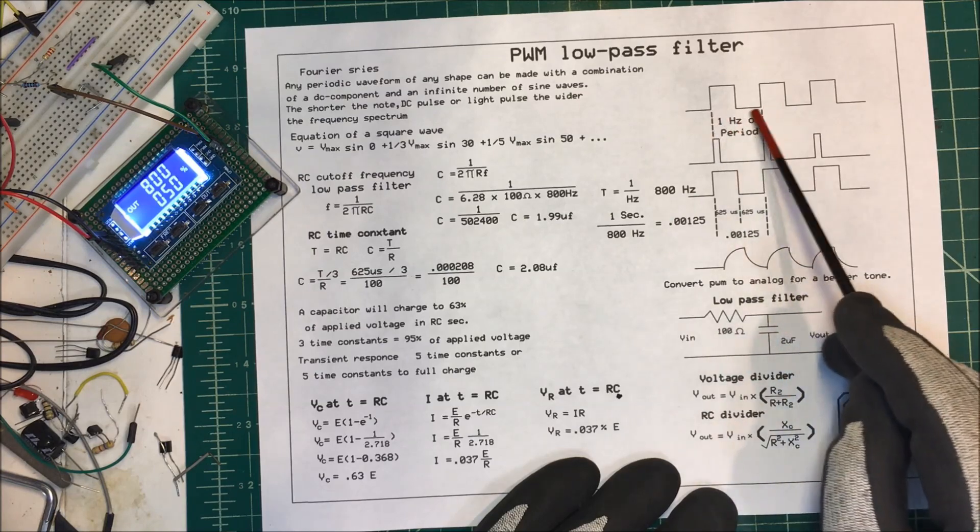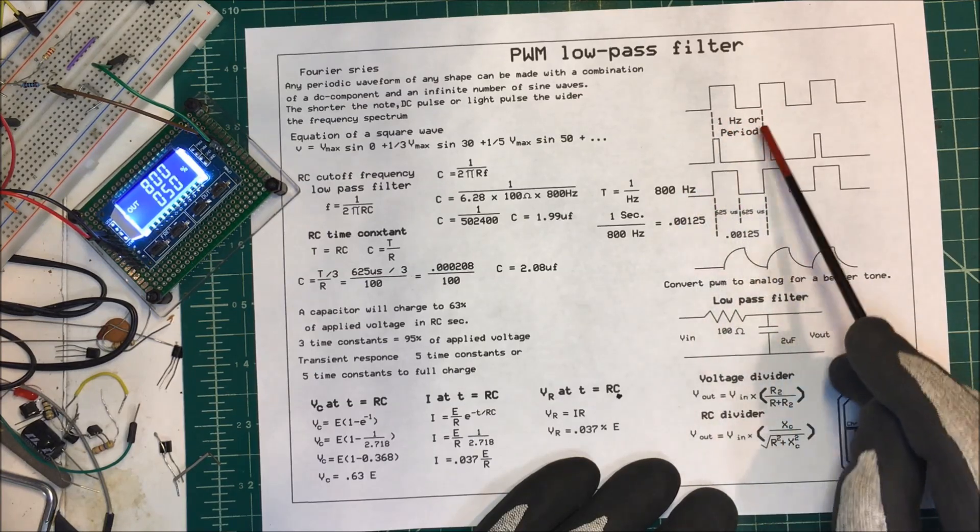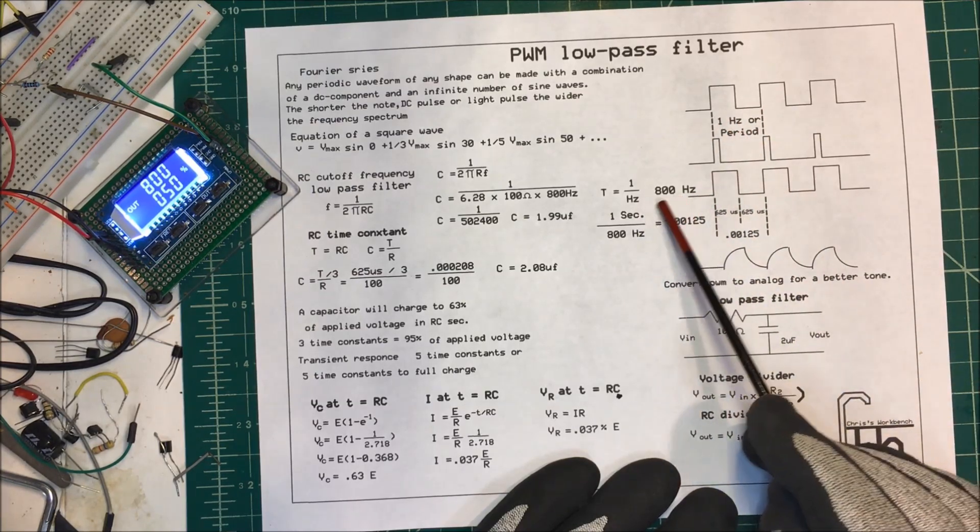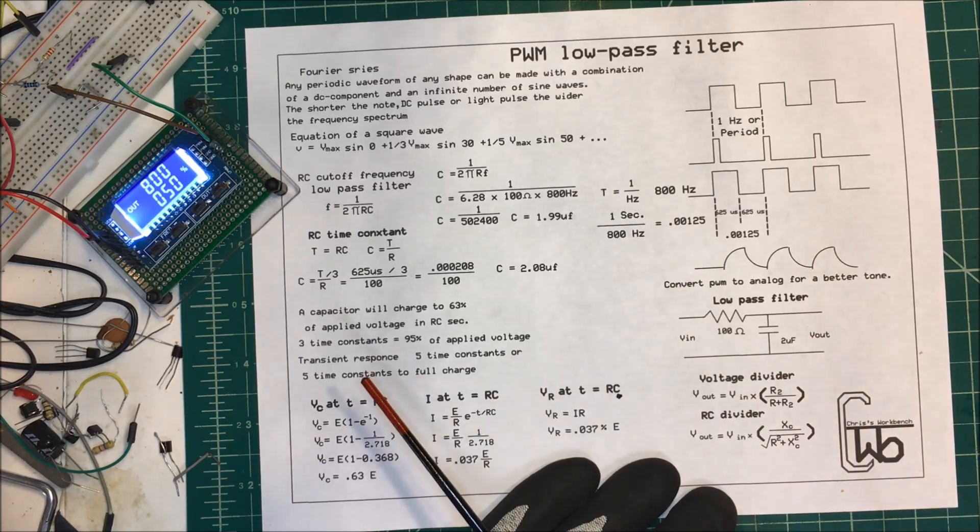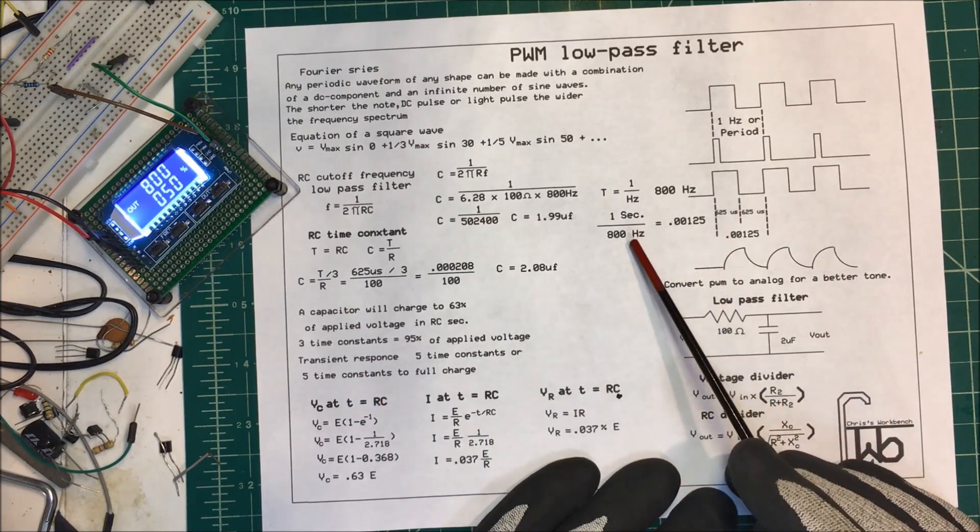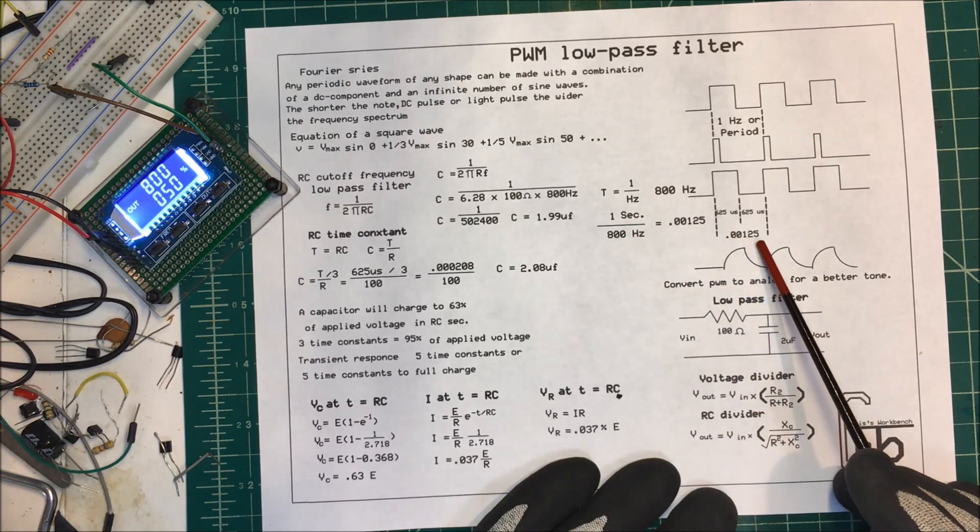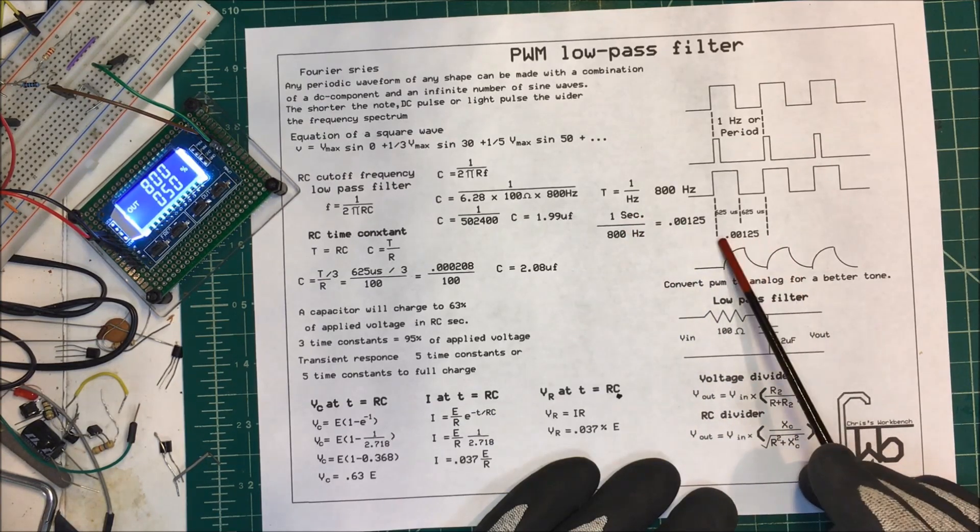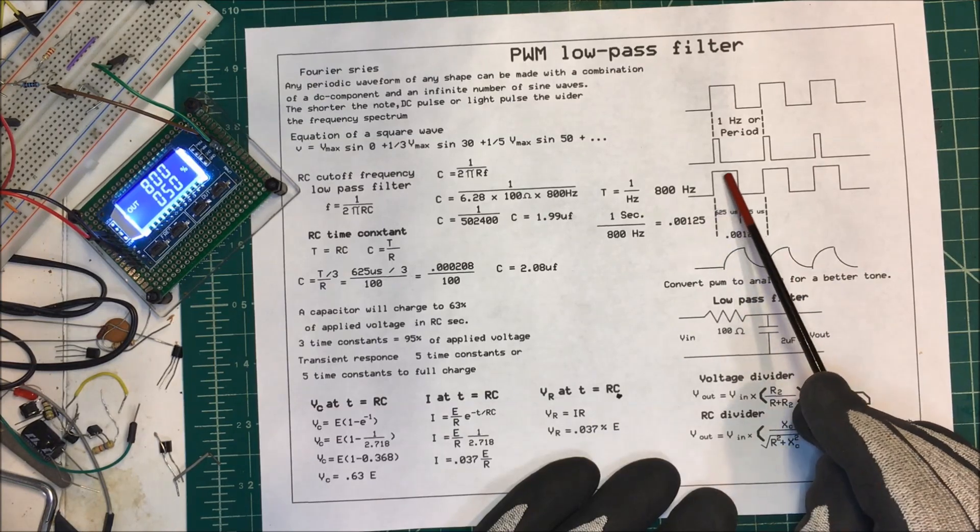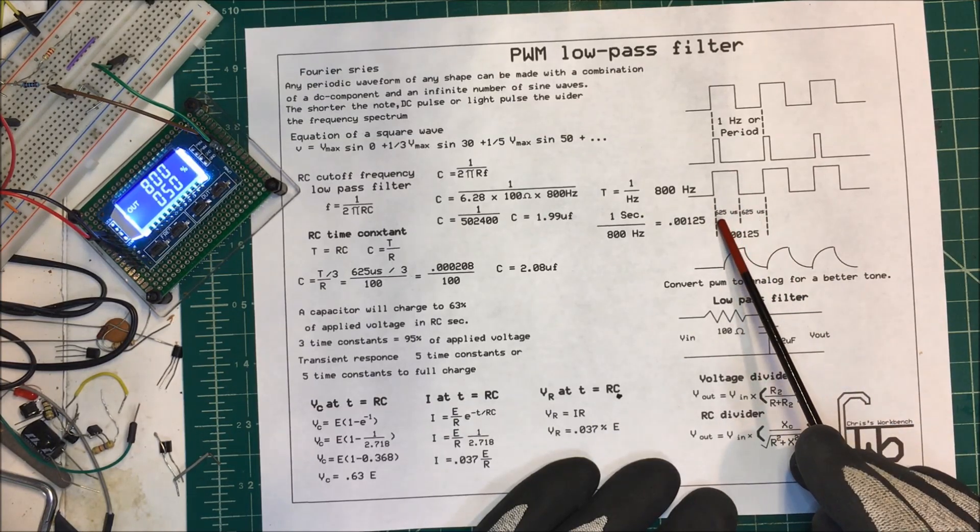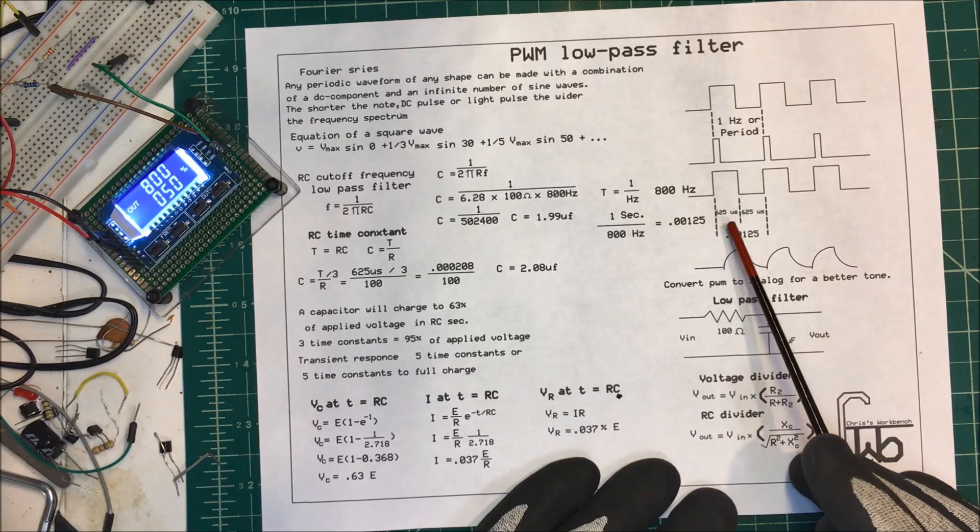This period here, for us, it's 800 hertz. That means we take 800 and divide it into one to get our time in seconds, right? 800 goes into one second, so that's 0.00125. That's our period there. But we only want half of this, so it's going to be 625 microseconds here.